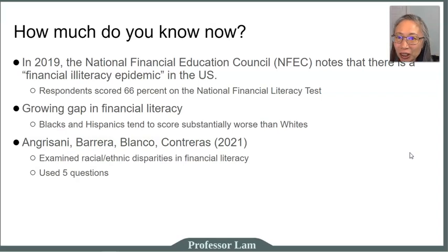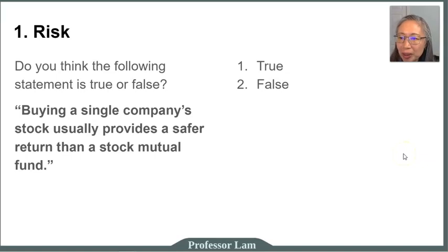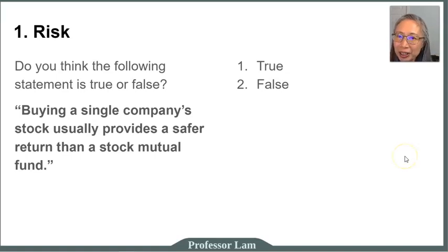We're going to go through these questions together and see how you did compared to the participants in their study. If you don't have pen and paper handy, pause the video and go grab some. So question one is about risk. The question is: buying a single company's stock usually provides a safer return than a stock mutual fund. Is that true or false? Write down one for true and two for false. Pause the video until you're ready and we'll advance to the next question.